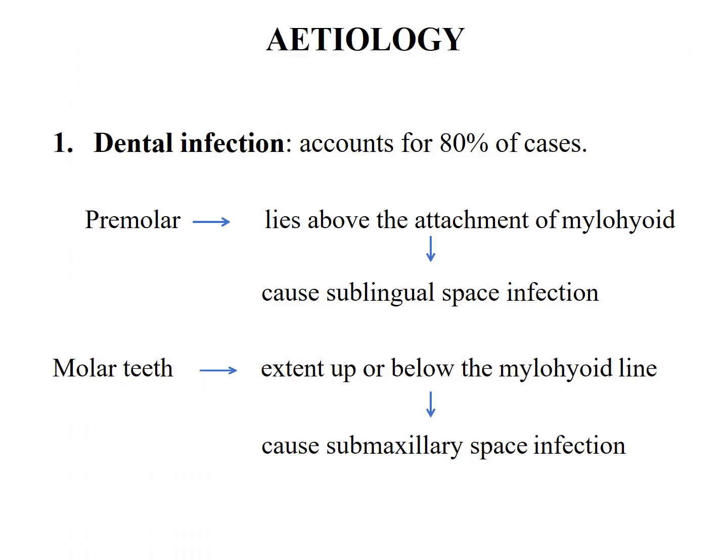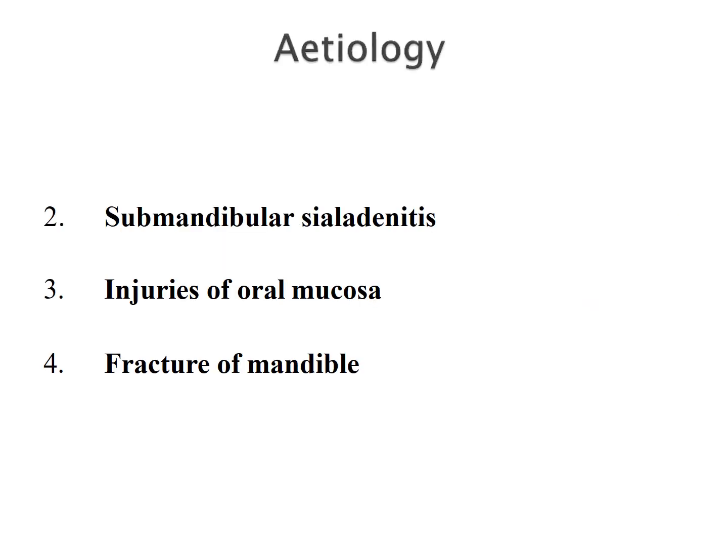Etiology: Dental infections account for 80% of cases. Roots of premolars often lie above the attachment of the mylohyoid and cause sublingual space infection, while roots of the molar teeth extend to or below the mylohyoid line and primarily cause submaxillary space infection. Other causes include submandibular sialadenitis, injuries of the oral mucosa, and fractures of the mandible.